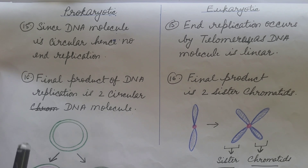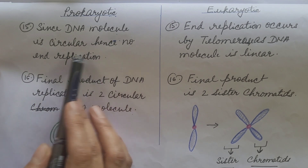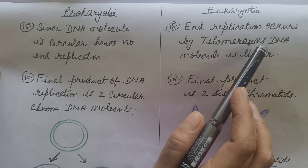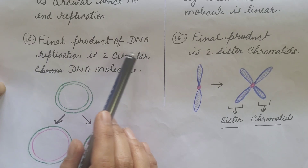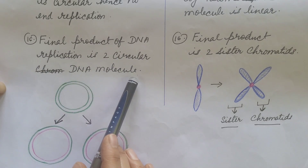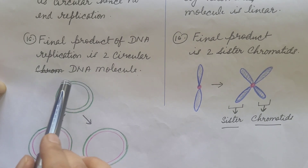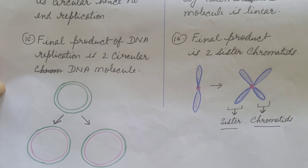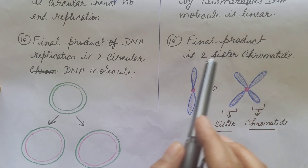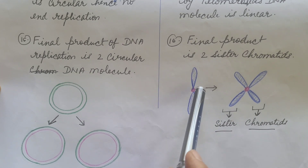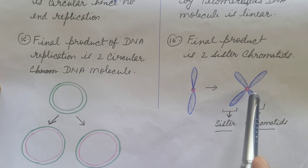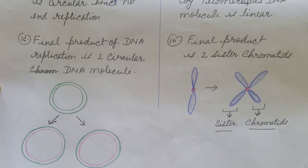Since the prokaryotic DNA molecule is circular, no end replication problem arises. In eukaryotes, end replication is carried out by the enzyme telomerase, as the DNA molecule is linear. The final product of DNA replication in prokaryotes is two circular double-stranded DNA molecules. In eukaryotes, the final product is two sister chromatids — after DNA replication in the S phase of the cell cycle, two sister chromatids are obtained that are attached at the centromere. The cell cycle topic has already been discussed in a separate video; the link is in the description box.